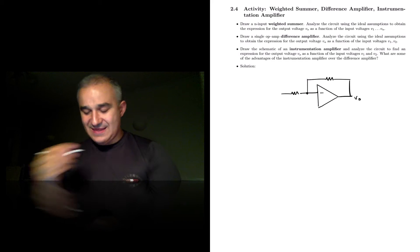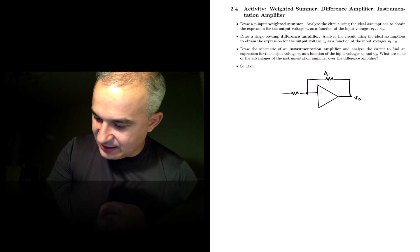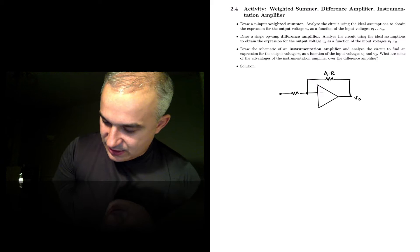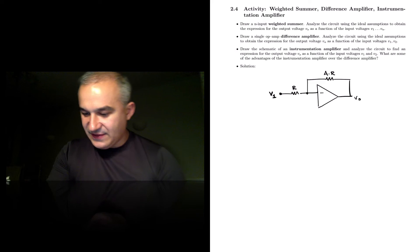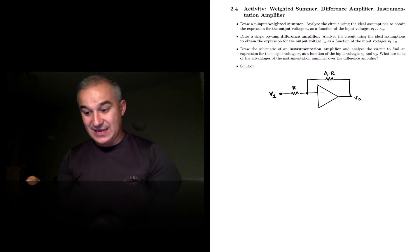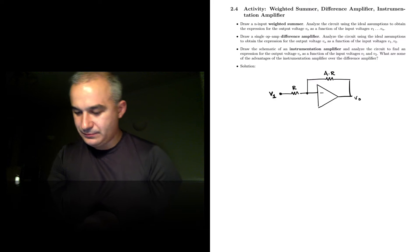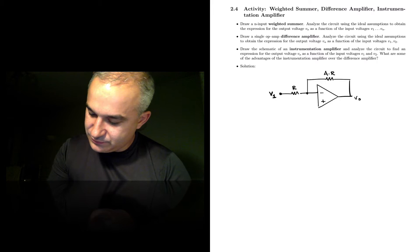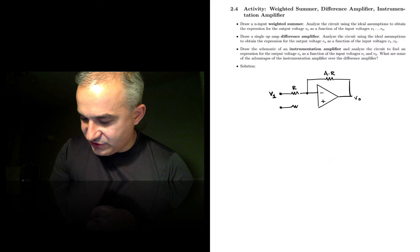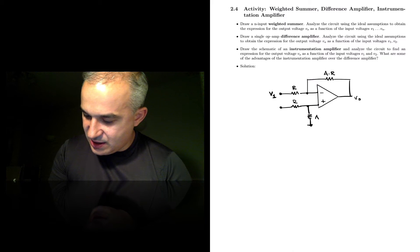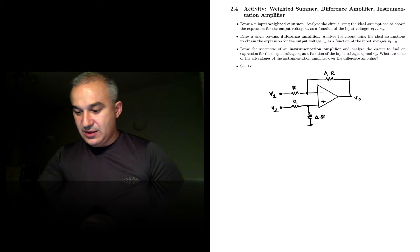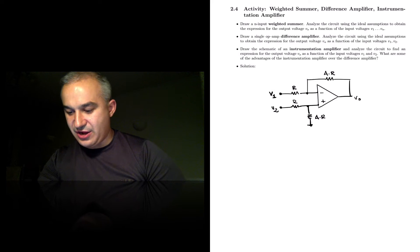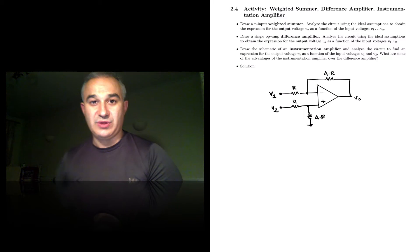Where you have in the feedback network A times R and R. So this is the first voltage, V1. This R and this R are the same, so this will be the gain. And in the non-inverting input we have a voltage divider, which is R and A times R. These resistors need to be matched — R and R, and AR and AR — in order for the circuit to work with the proper performance.